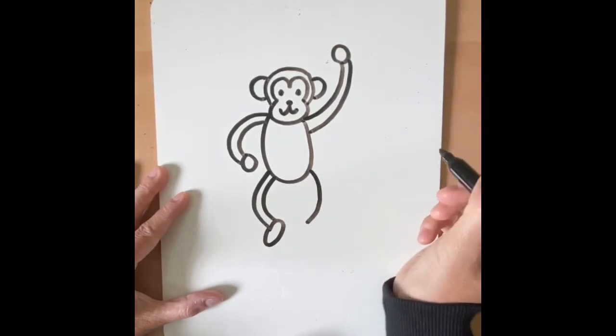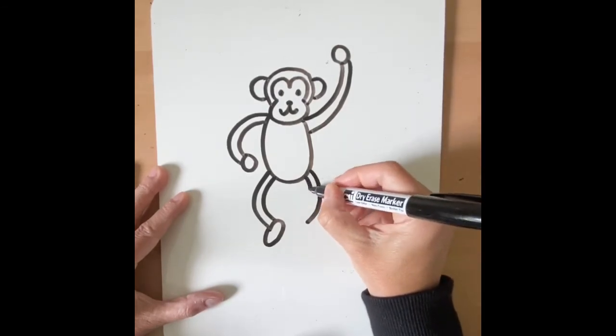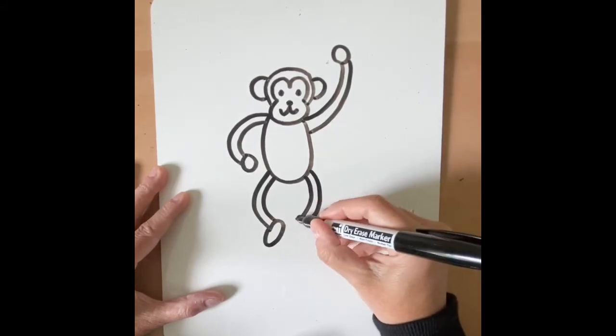I'm going to curve the line again, do another curved line, and then an oval for his foot.